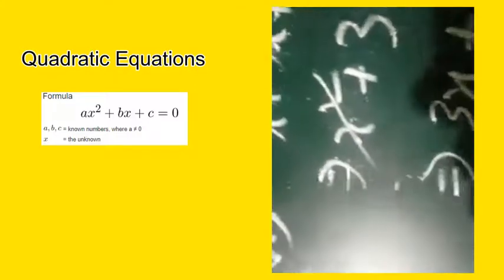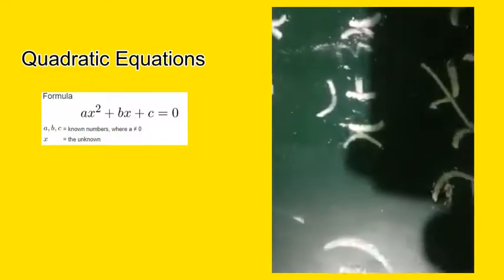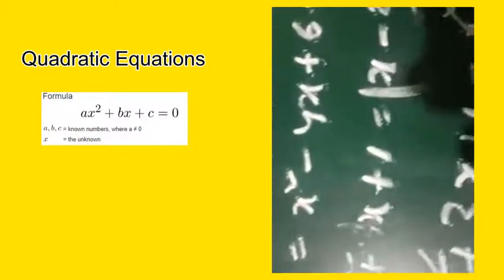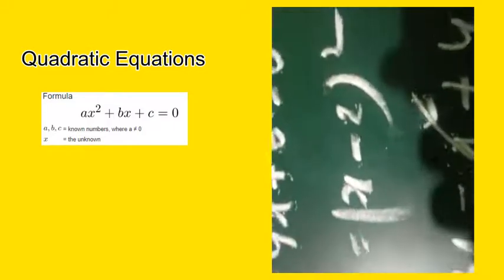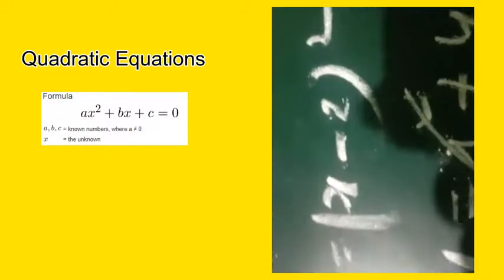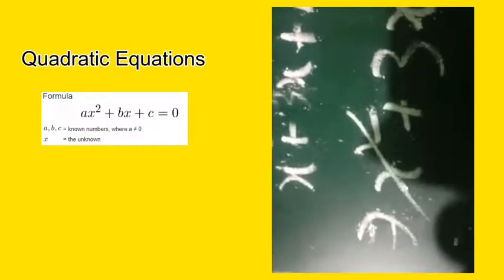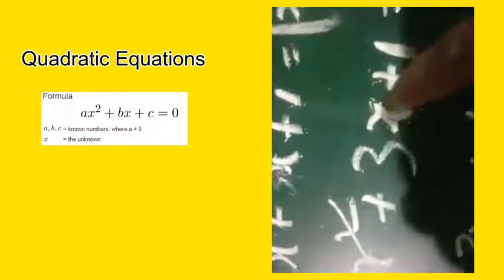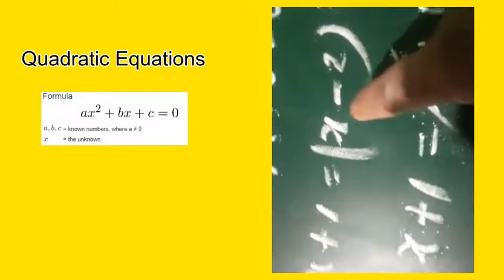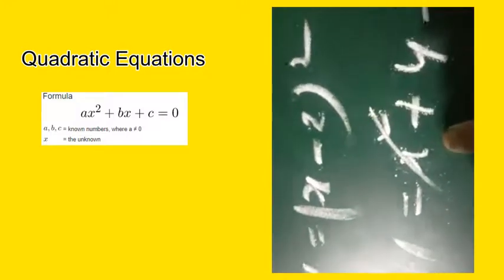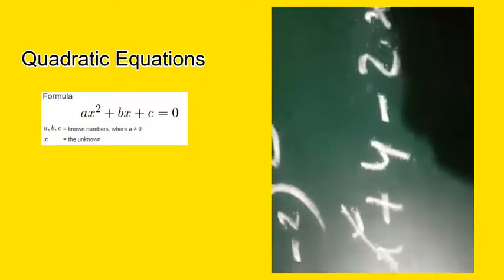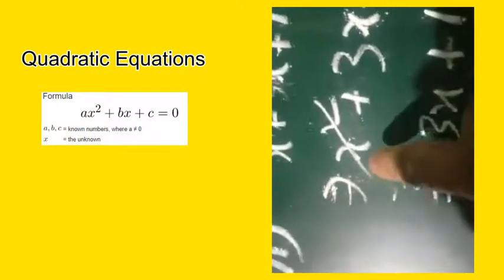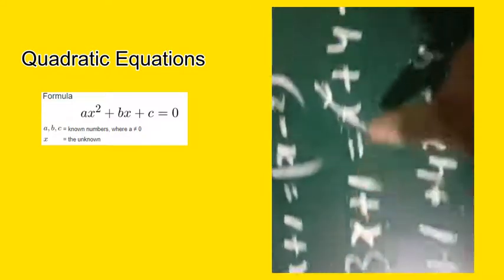Now I will go to another question — question 6: is x squared plus 3x plus 1 equal to (x minus 2) whole squared a quadratic equation? First, expand the right side using the formula (a minus b) squared equals a squared plus b squared minus 2ab, giving x squared plus 4 minus 4x.